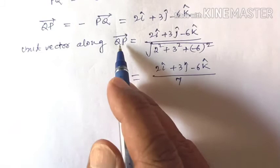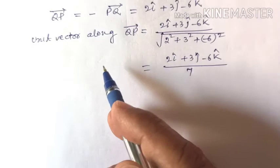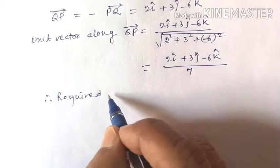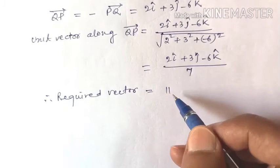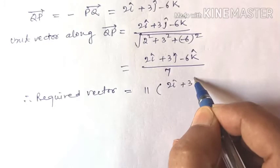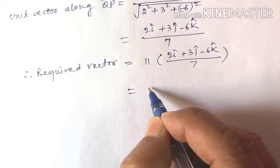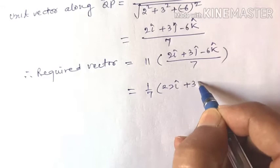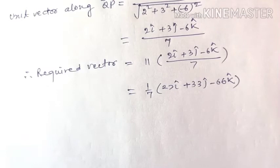So the unit vector along QP is (2i plus 3j minus 6k) divided by 7. Therefore, the required vector of magnitude 11 along QP is 11 times this unit vector: 11 times (2i plus 3j minus 6k) upon 7, which gives (1/7)(22i plus 33j minus 66k).